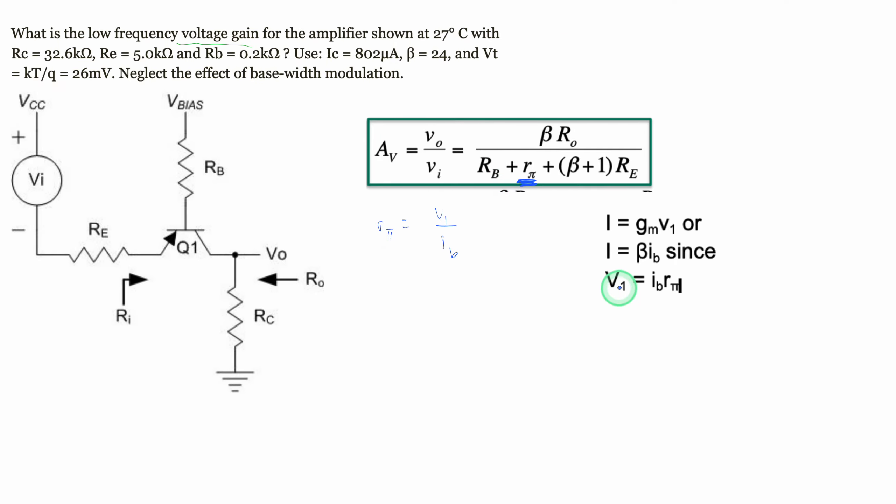We can say that our V_T is going to be I over g_m, so that is what this will look like. Then our I_B is going to be I over beta. With our cancellation, we can cancel out the I's and we're going to have beta over g_m. We don't know our g_m yet though, so let's find it.